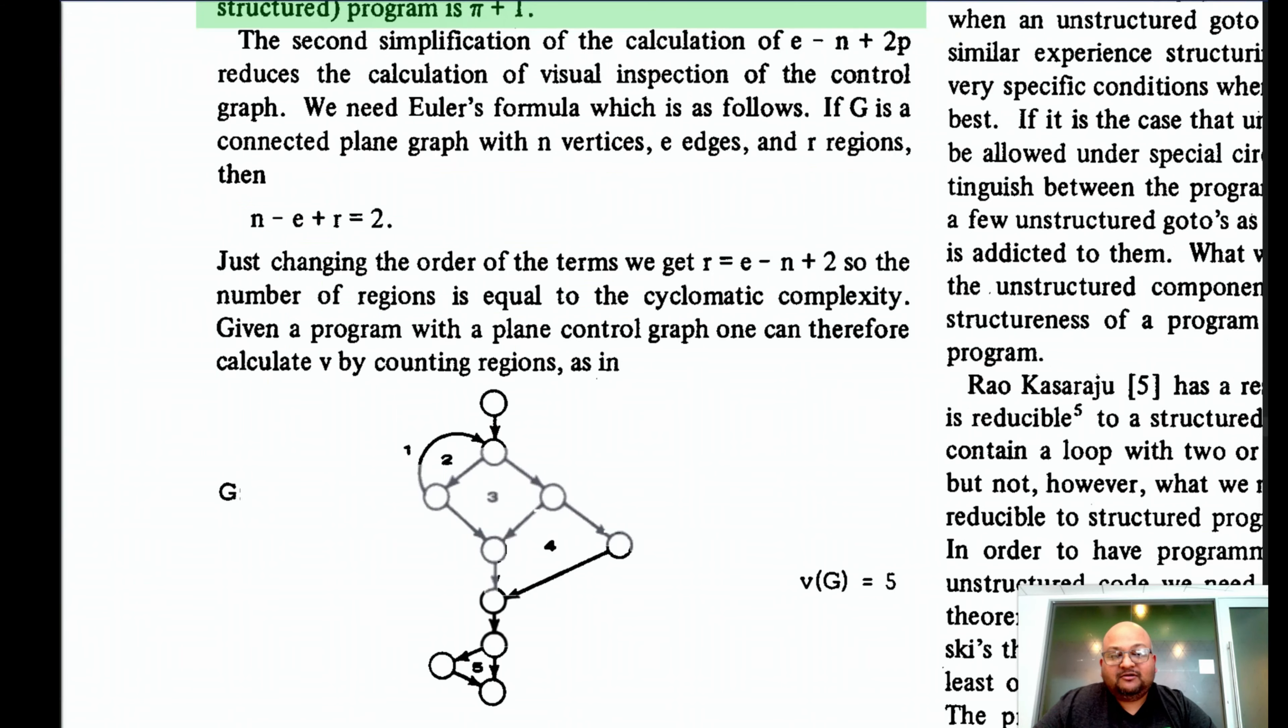Now we come to a very striking and beautiful relationship between cyclomatic complexity and Euler's theorem for graphs. If G is a connected planar graph with n vertices, e edges and r regions, then Euler's theorem states that n minus e plus r equals two. What is a planar graph? A planar graph is simply a graph that can be drawn on a two dimensional surface or a plane without its edges intersecting.